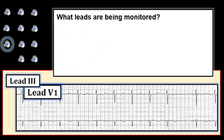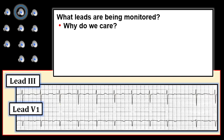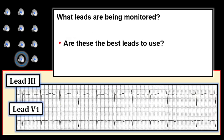The answer is that we simply don't know which leads are being monitored. It turns out that the leads being monitored on this simultaneously recorded two-lead rhythm strip are lead III and lead V1. Why do we care what leads are being used? We get lots of information from knowing the electrical viewpoint of our observations. Some leads are better for picking up P waves; others are better for looking at the QRS. Ideally we'll have more than a single lead, because things occurring at the same instant in time will often look somewhat different from another electrical perspective.